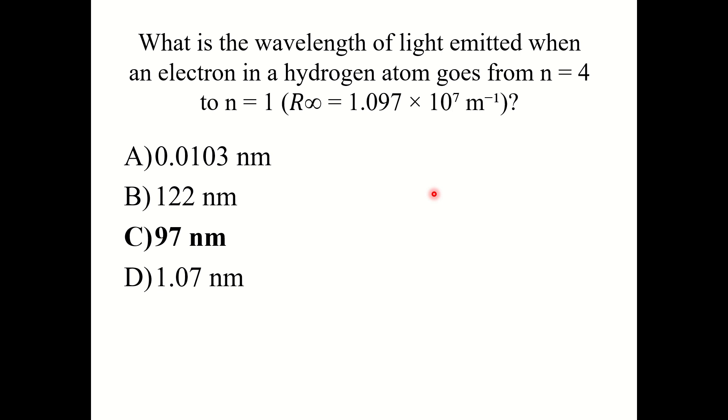Let's do a knowledge check question. What is the wavelength of light emitted when an electron in a hydrogen atom goes from n equals 4 to n equals 1, where r infinity equals 1.097 times 10 to the seventh inverse meters? The correct answer here is C, 97 nanometers.